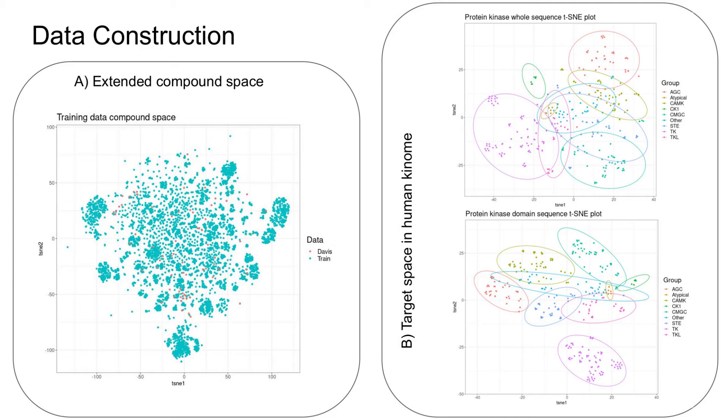We can see that most of the groups are very well separated from each other in the two-dimensional space, with the exclusion of two kinase groups: atypical and other.